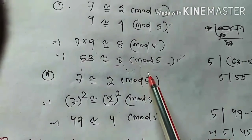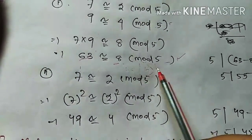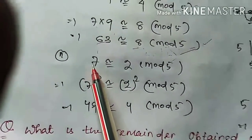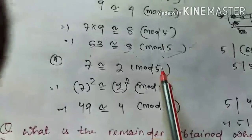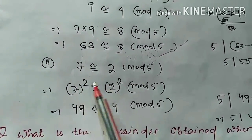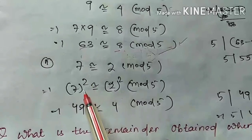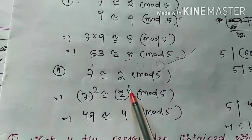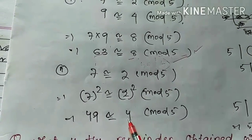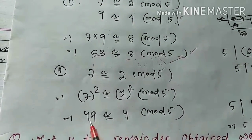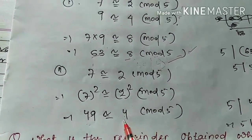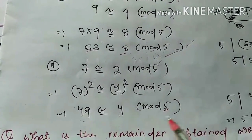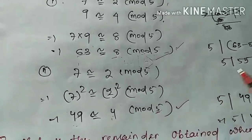Another example: 7 is congruent to 2 modulo 5. By raising the power by 2 on both sides, 7 squared is 49 and 2 squared is 4. We can verify: 49 minus 4 is 45, and 45 is divisible by 5, so we can write 49 is congruent to 4 modulo 5.